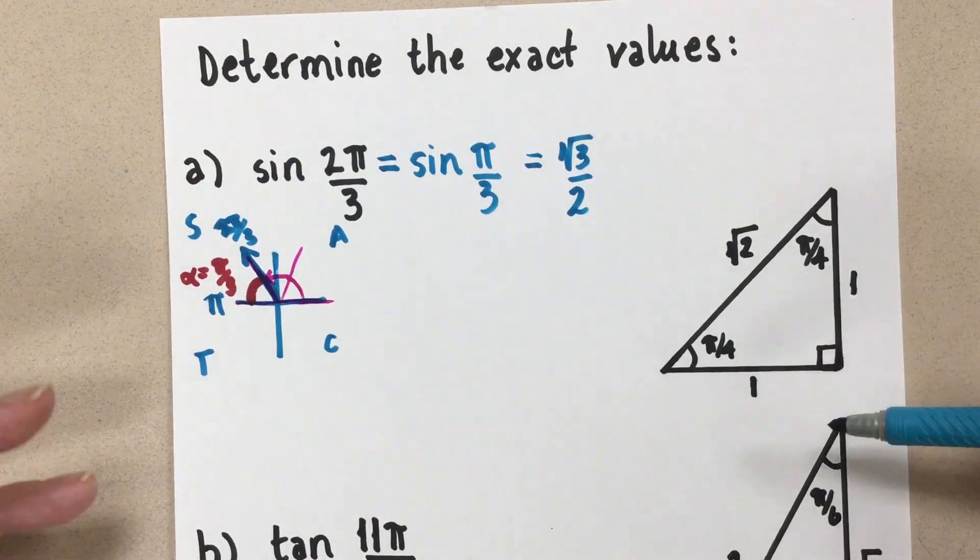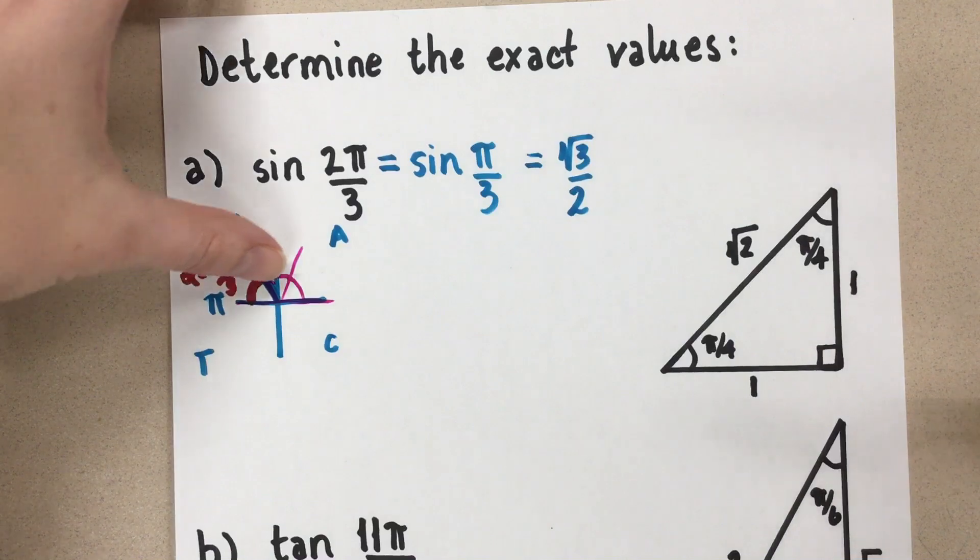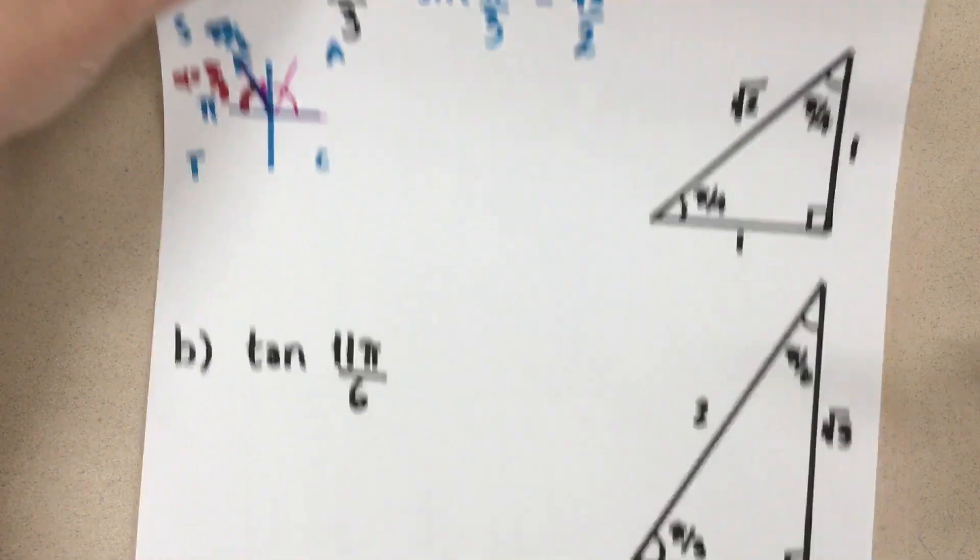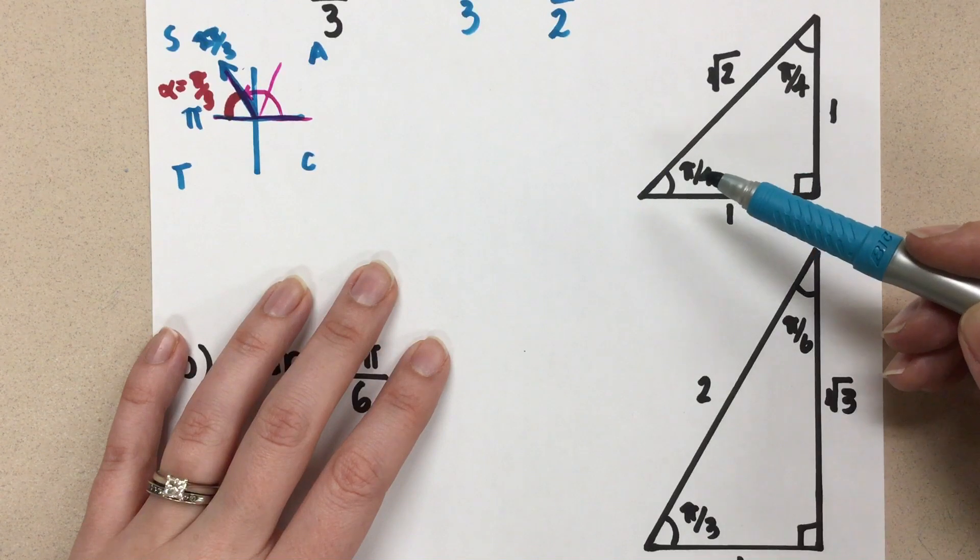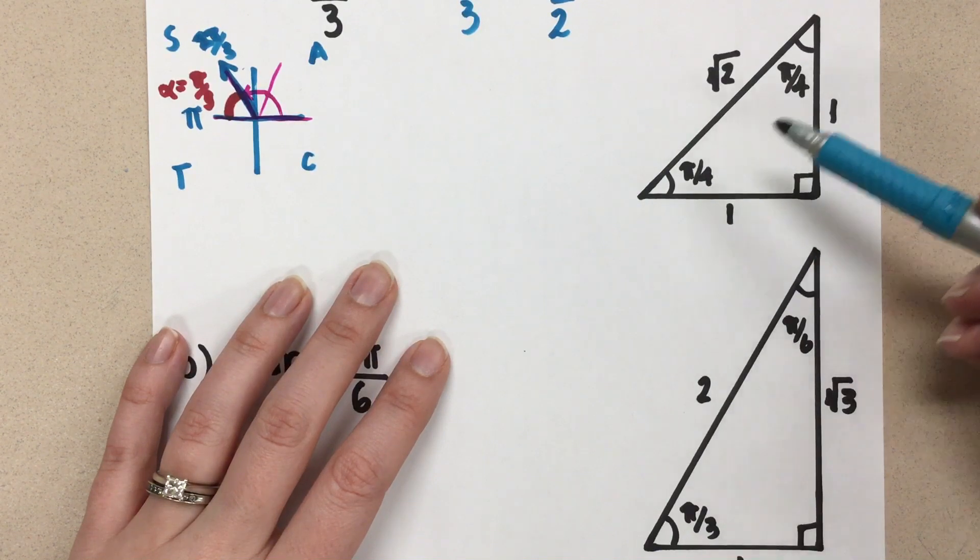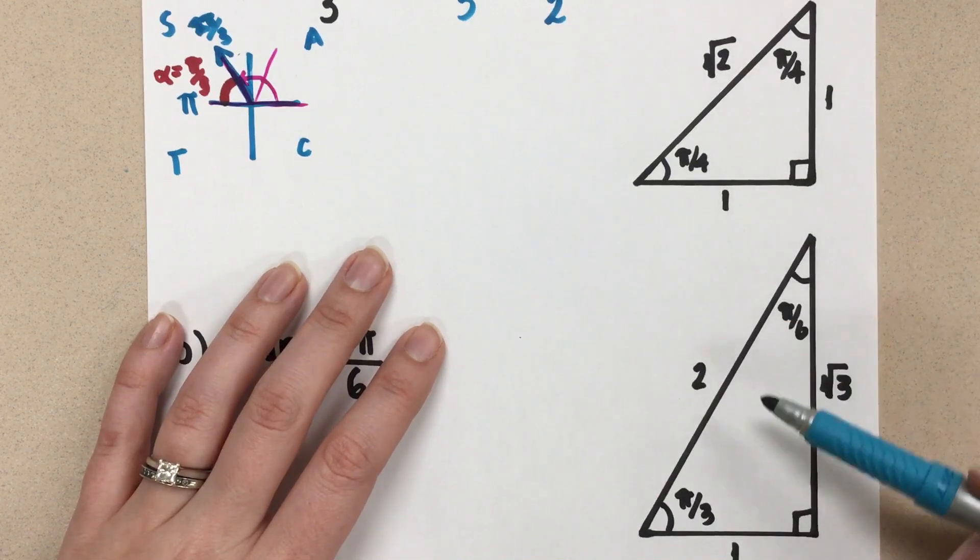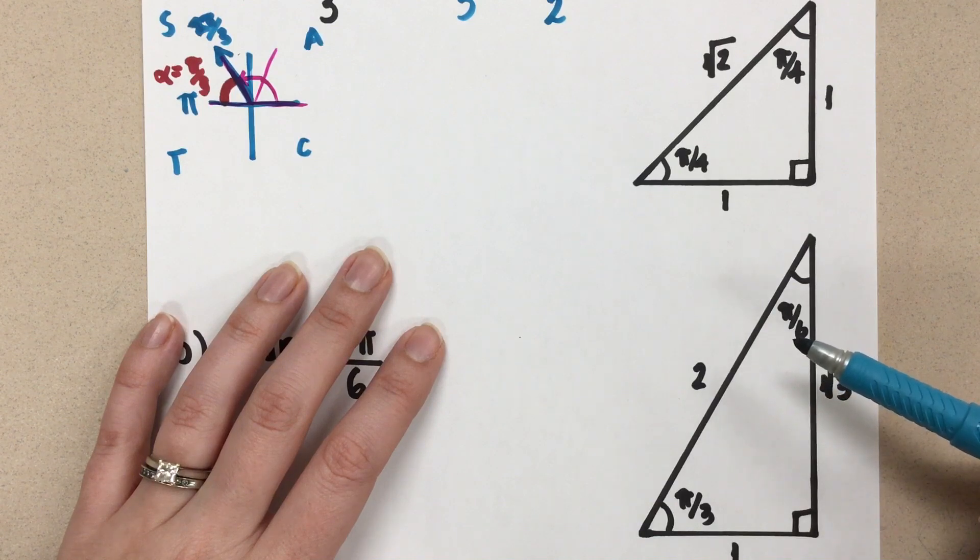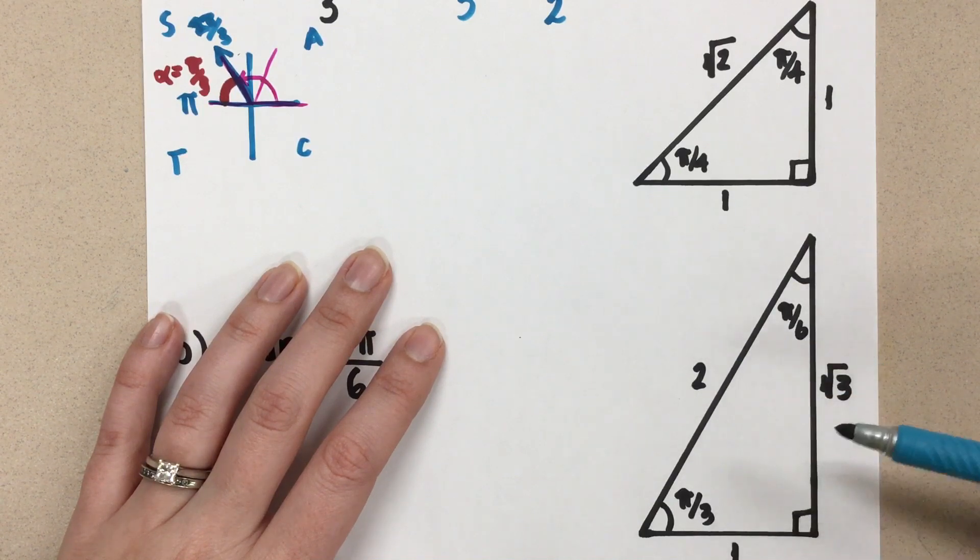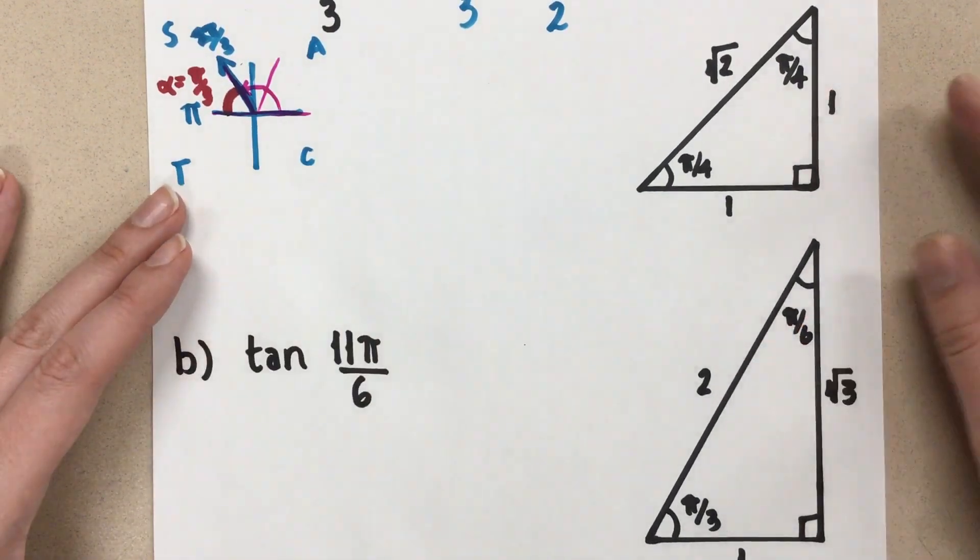You'll notice how our special triangles remain the same as they were with degrees. We've just changed the angles to radians now. So here on this special triangle, this was 45 degrees, which is the same as π over 4, and that was 45 degrees, which is the same as π over 4. And then down here, π over 3 was 60 degrees, and π over 6 is 30 degrees. But all of the values here in our triangles remain the same. We're just converting those units.